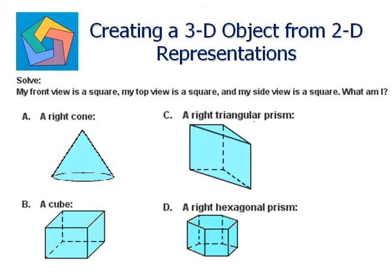Let's see option A, right cone. The front view we can see is a triangle here. So this cannot be a representation of our 3D object.